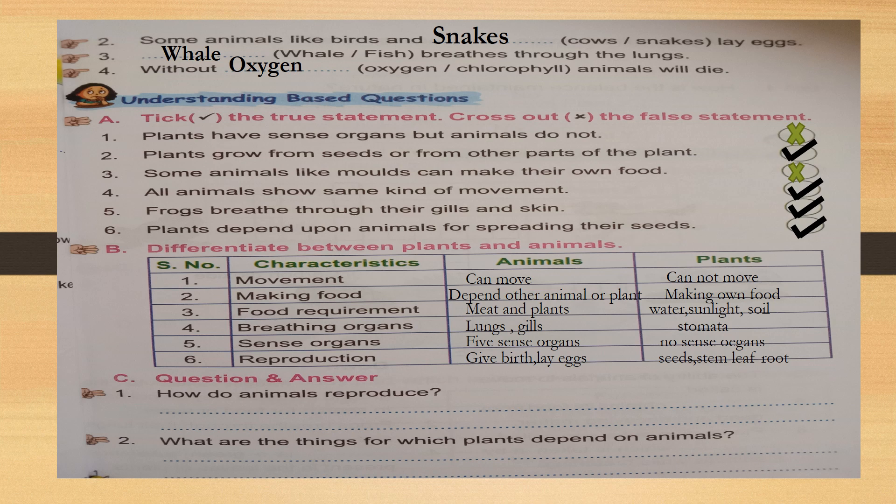Fifth: sense organs — animals have five sense organs, but plants have no sense organs. Sixth: reproduction — animals give birth or lay eggs; plants reproduce through seeds, stem, leaf, and root. Look at the screen and write children. If you want, check the answer.